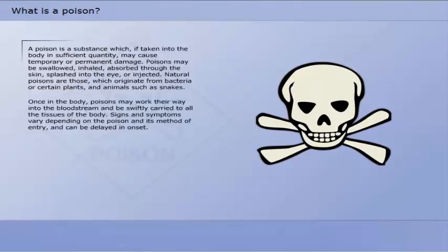Once in the body, poisons may work their way into the bloodstream and be swiftly carried to all the tissues of the body. Signs and symptoms vary depending on the poison and its method of entry, and can be delayed in onset. Vomiting is common in many cases, and carries with it the additional danger of the casualty inhaling his own vomit and choking.